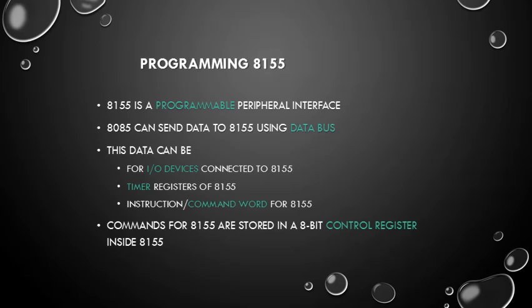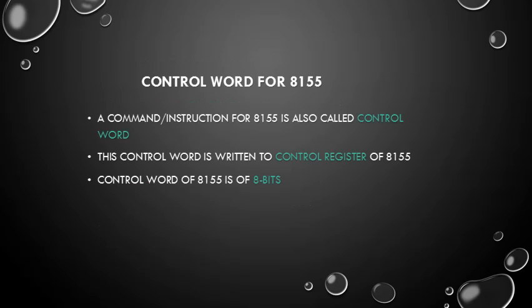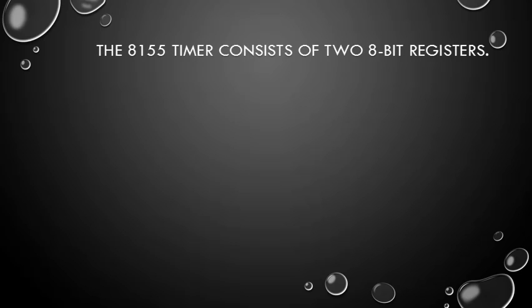Commands for 8155 are stored in an 8-bit control register inside 8155. A command or instruction for 8155 is also called a control word. This control word is written to the control register of 8155, and the control word of 8155 is 8 bits wide.